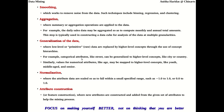For example, categorical attributes such as street can be generalized to higher-level concepts like city or country. Normalization specifies data within a specified range. Attribute construction involves constructing new attributes from an existing set of attributes to help the mining process — new features or attributes can be added according to the analysis requirement.